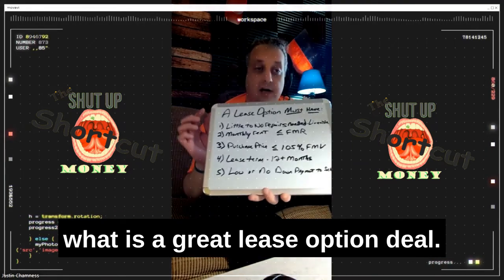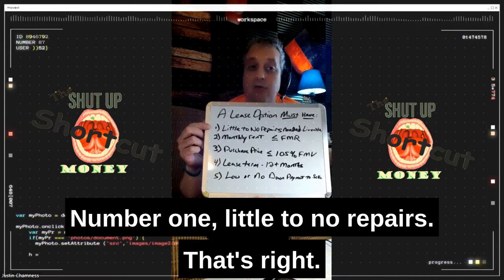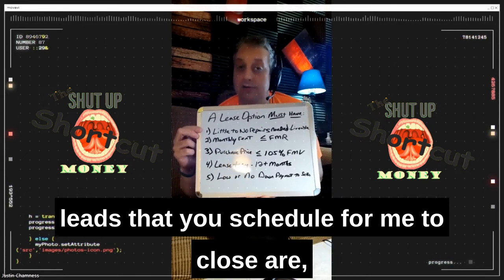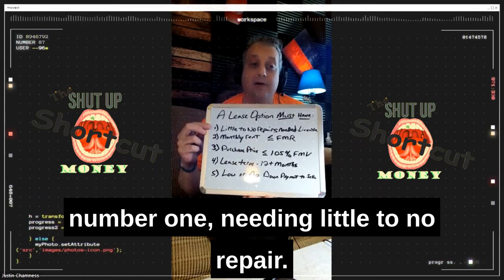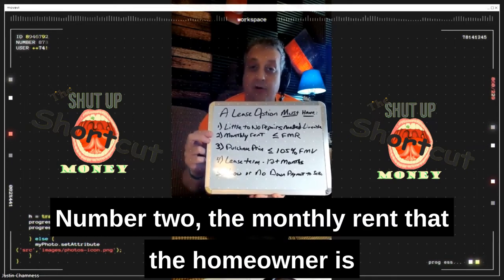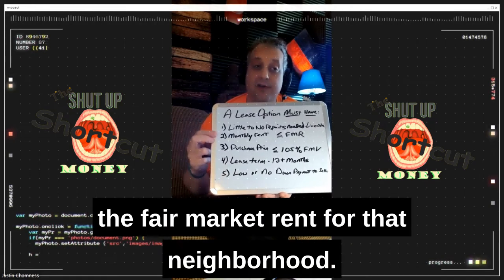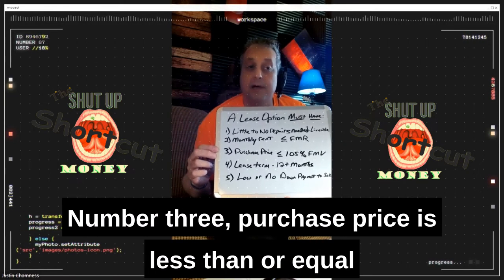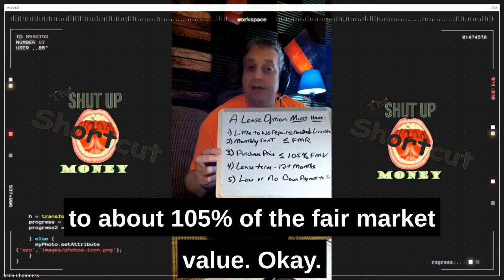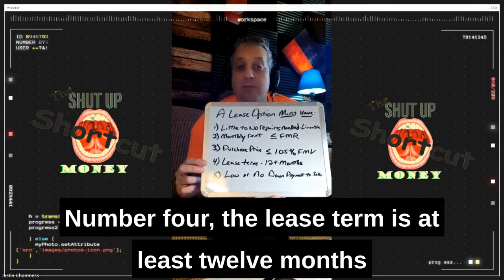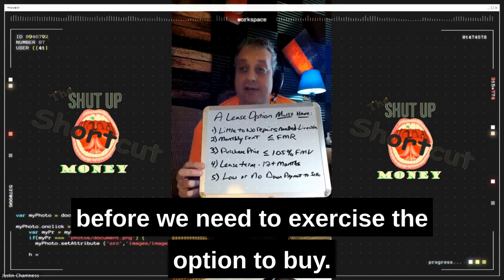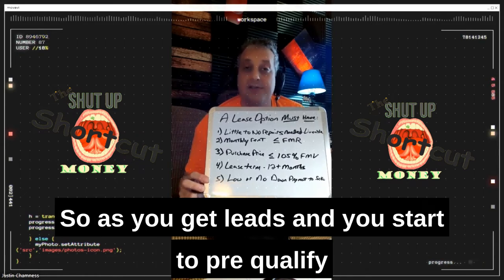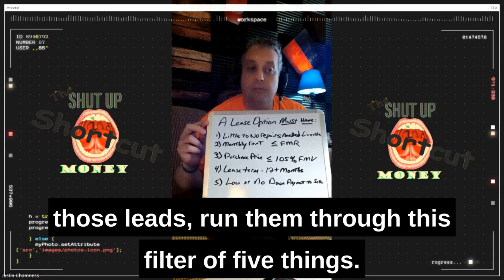Now, let me remind you what makes a great lease option deal. A great lease option deal must have these five things. Number one: little to no repairs — the property needs to be very livable. Number two: the monthly rent the homeowner needs is less than or equal to the fair market rent for that neighborhood. Number three: the purchase price is less than or equal to about 105% of the fair market value. Number four: the lease term is at least 12 months before we need to exercise the option to buy. Number five: low or no down payment to the homeowner. As you get leads and pre-qualify them, run them through this filter of five things.